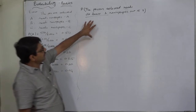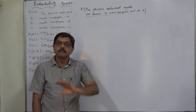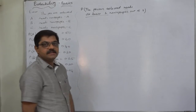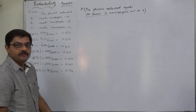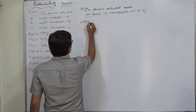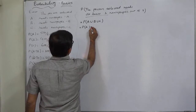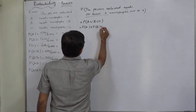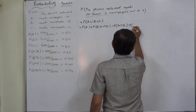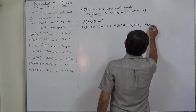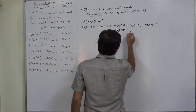What is the probability that the person selected reads at least one newspaper out of three? The easiest way to calculate the probability of at least one is to use the formula of union: P(A∪B∪C) = P(A) + P(B) + P(C) − P(A∩B) − P(B∩C) − P(A∩C) + P(A∩B∩C).